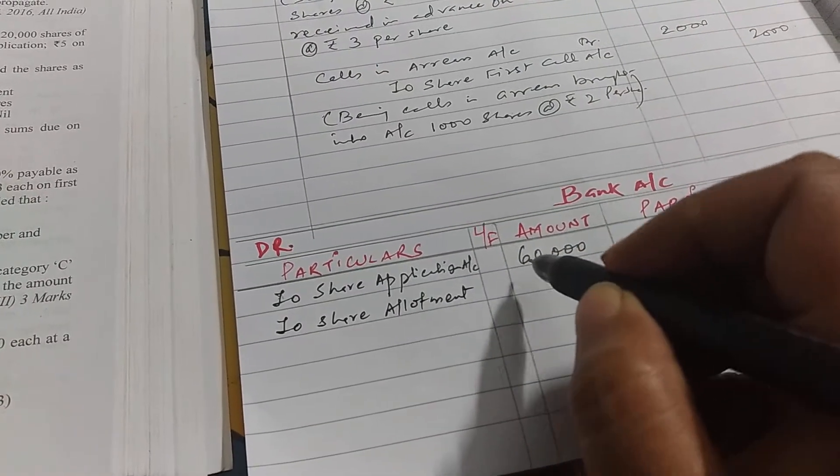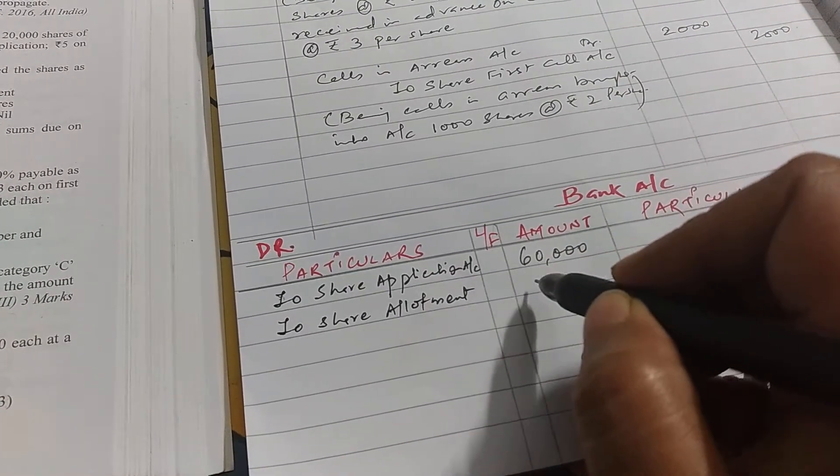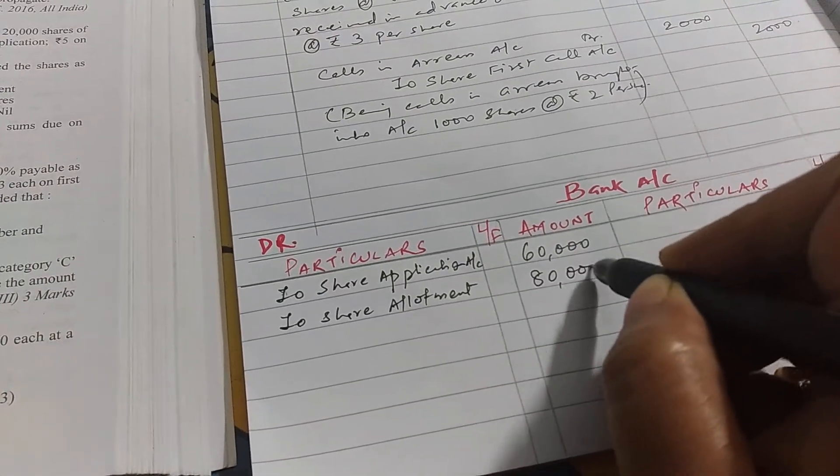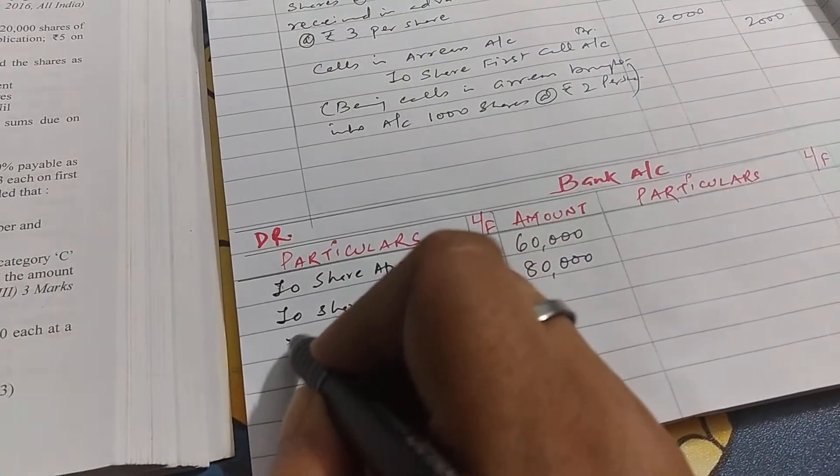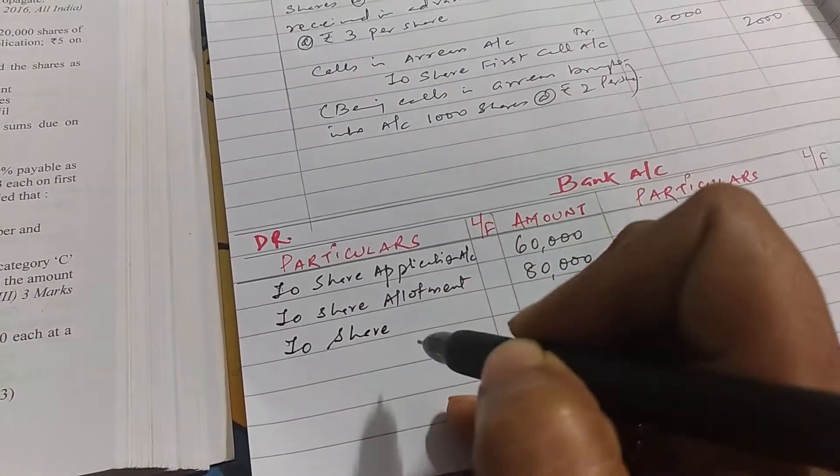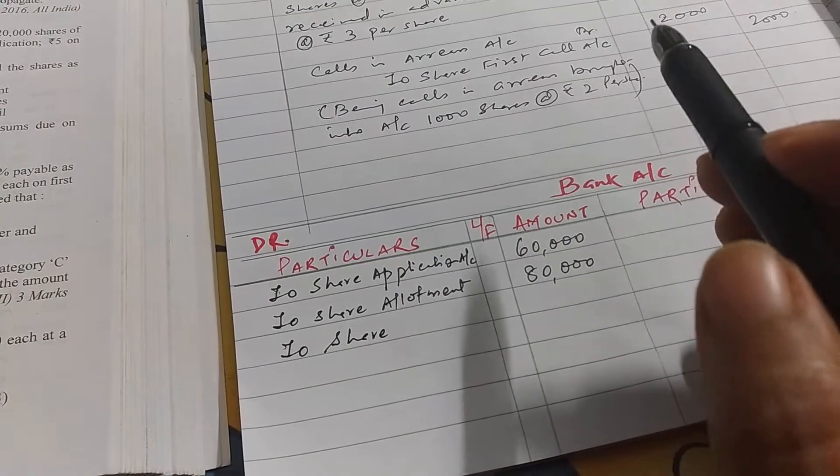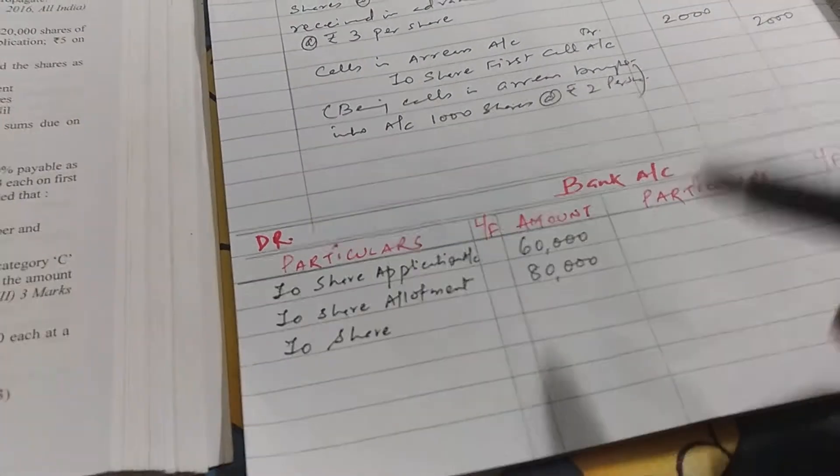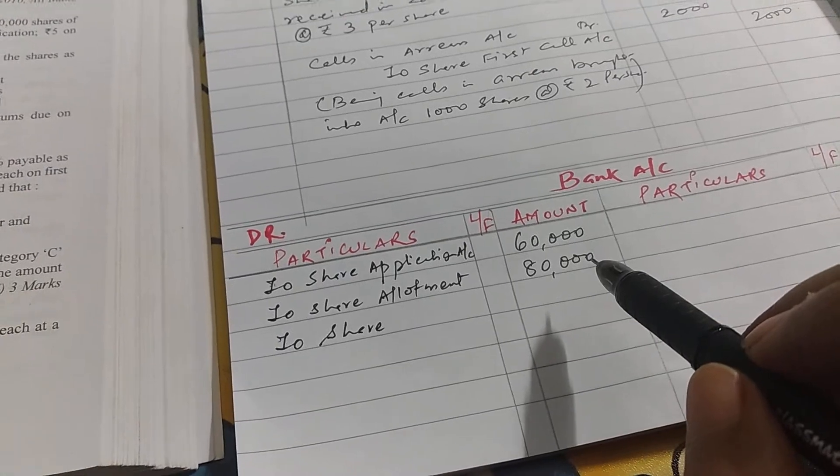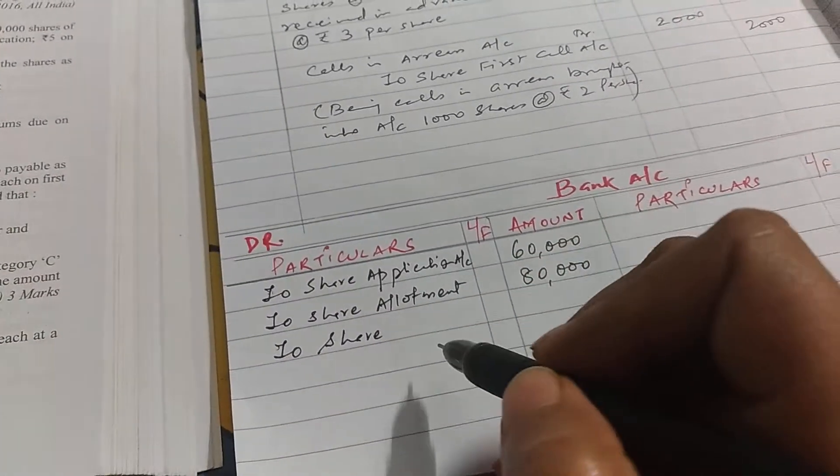How much? 80,000 share allotment is given, so 80,000. Then we have to post the journal entry related to bank in ledger. That you have already done in class 11, so it's very simple and easy.